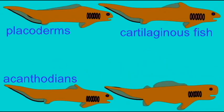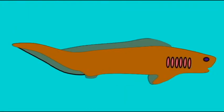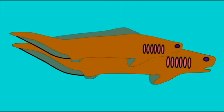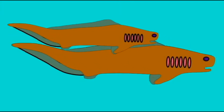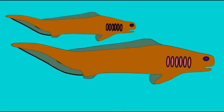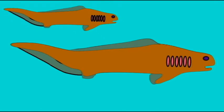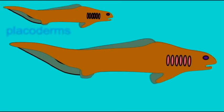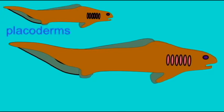However, it is generally thought that placoderms represent the most primitive branch of jawed vertebrates, since the other groups possess true teeth, a same pattern of tooth replacement, and similarities of the jaw attachment and brain case which placoderms lack. So placoderms are considered to be the most primitive group of jawed fish.